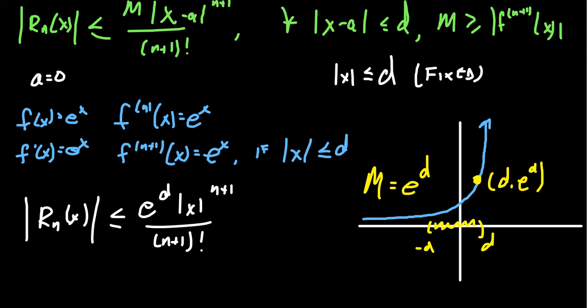Continuing on, let's consider what happens as we allow n to go towards infinity. First, this is bounded below by zero — the error can never be negative. So we're going to set up a squeeze argument for R_n of x.